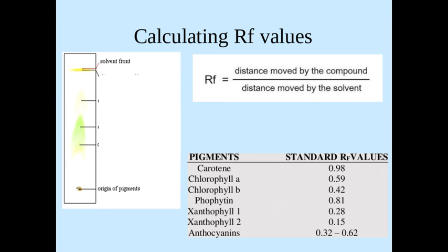What you then do is you calculate your Rf values. As you can see on this particular chromatogram you do get beautiful colors when you do this with photosynthetic pigments. You can see where the different pigments end. What you would do is the distance moved by the compound over the distance moved by the solvent.